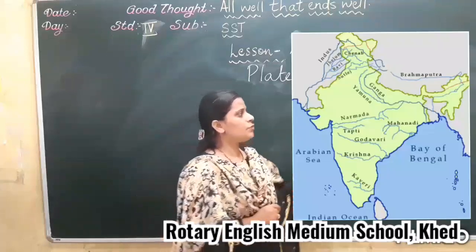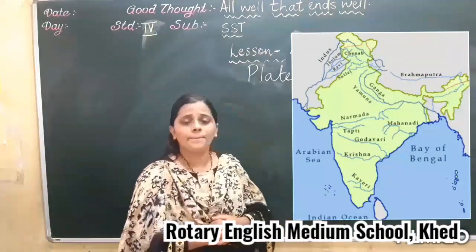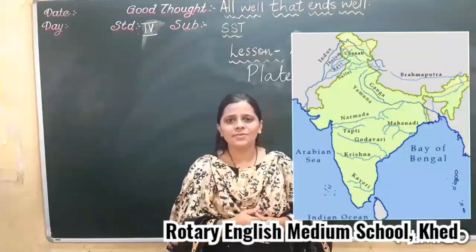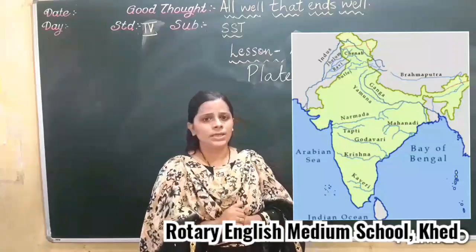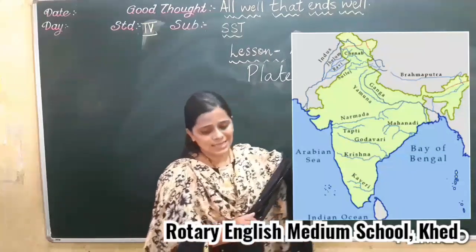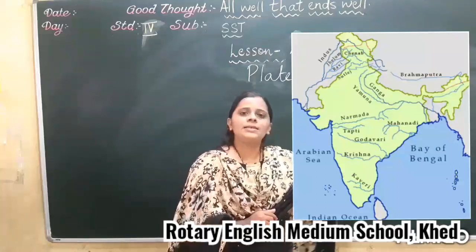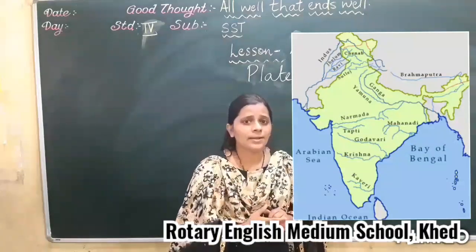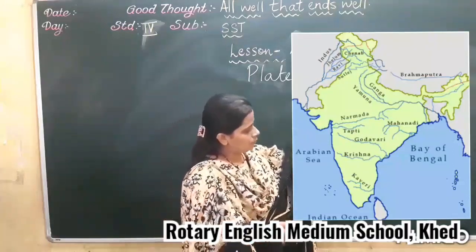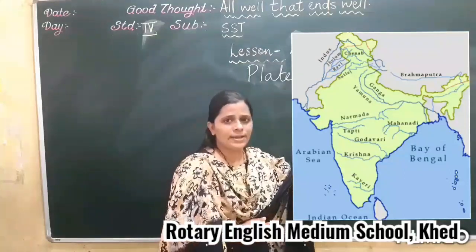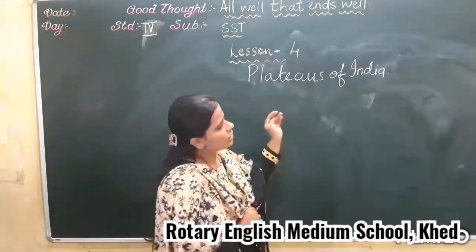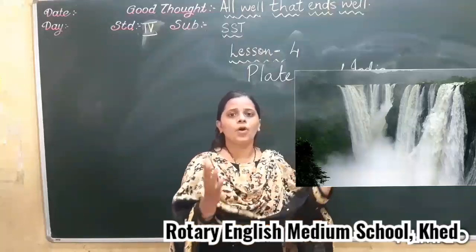Most of the rivers which flow in this plateau region are seasonal rivers. As we learned about northern plains, those are perennial rivers that flow throughout the year. But here in this plateau, the rivers are seasonal. They are not as large as the northern plain rivers. However, they flow with great speed and form waterfalls.